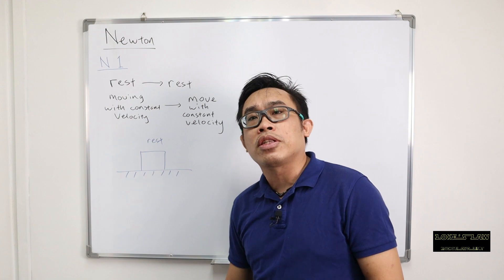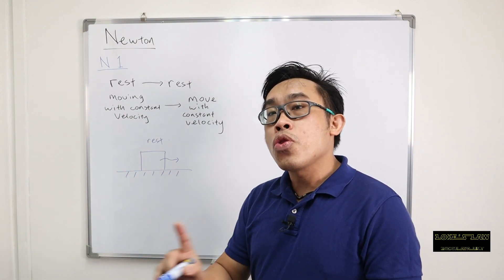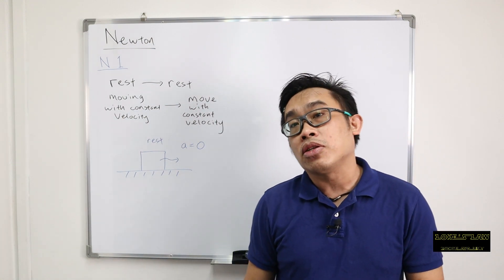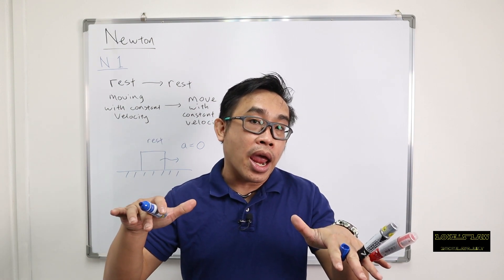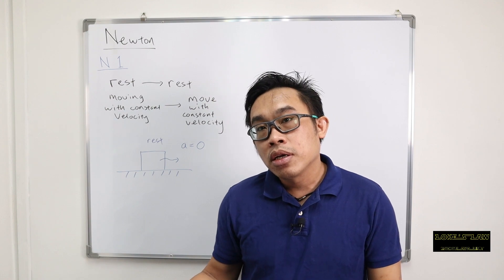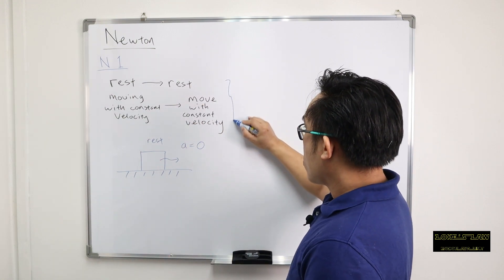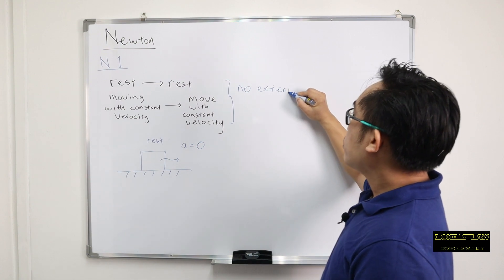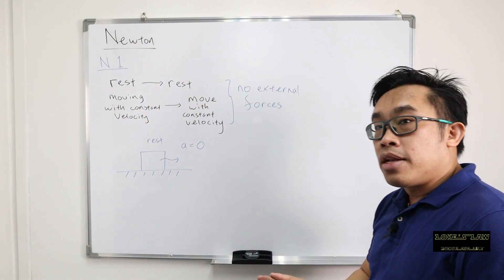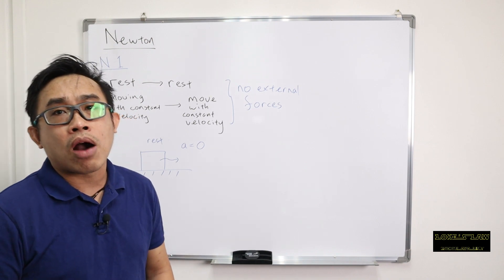He also says that when you're moving with constant velocity, you will continue to move. Constant velocity means there is no acceleration — acceleration is zero. But I want you to understand: acceleration zero doesn't mean the object is not moving; it just moves with the same speed. Newton also says that when there are no external forces acting on it — when no one disturbs the system — the object will stay as it is.